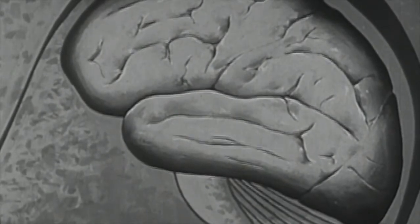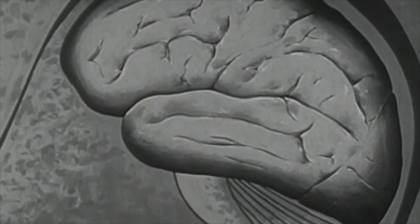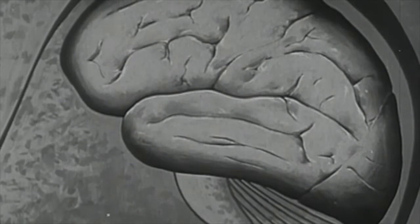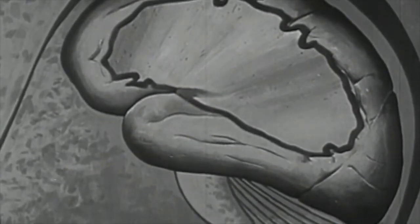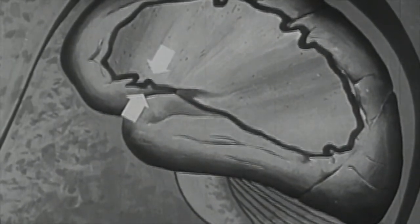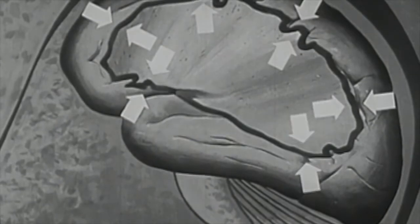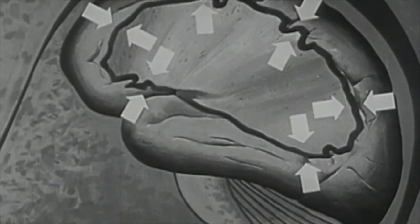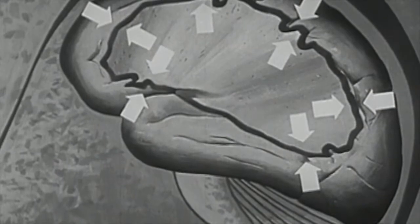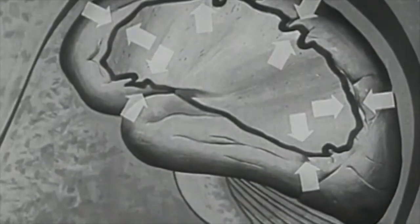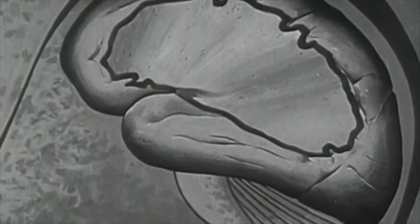Outwardly, the cerebrum is a pulpy gray mass with deep folds and convolutions. In cross-section, it is shown to have a thin outer layer of gray matter. This is called the cortex. It is composed of the nerve cells of the brain and is therefore the most vital area of activity.